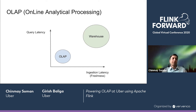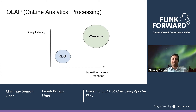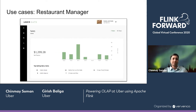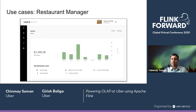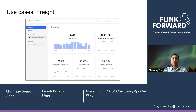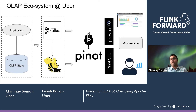OLAP, which stands for Online Analytical Processing, typically refers to analytical queries being performed on fresh data in a low-latency manner. Both query latency and ingestion latency have to be low, which is different from a traditional warehouse. A good example is the Uber Eats restaurant manager tool, given to restaurant owners across the globe for slicing and dicing their Uber Eats data in real-time — analyzing supply demand, sales metrics, and service quality. Another example is a dashboard used by Uber Freight for monitoring shipment status and marketplace health in real-time.